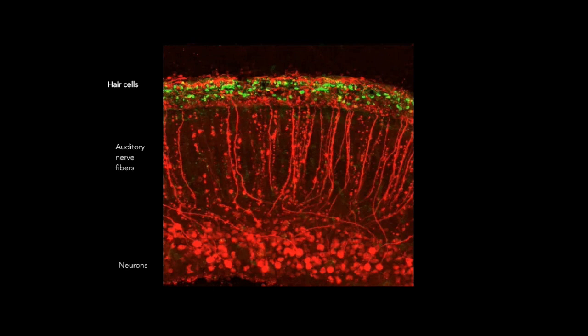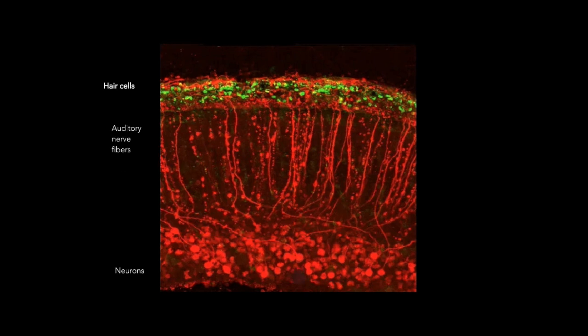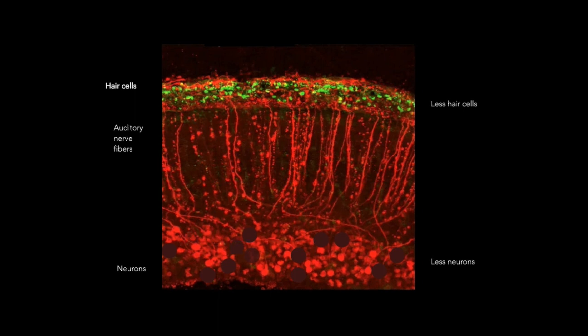The same happens with a company when the revenue decreases — employees are laid off to match the revenue to costs. The same thing the nervous system does in the process of adaptation. The worse we hear, the fewer neurons should support the lower activity of the inner cell. During gradual hearing loss, the nervous system has time to make changes in the organization and adjust the number of neurons to the deteriorating hearing and dying auditory cells.